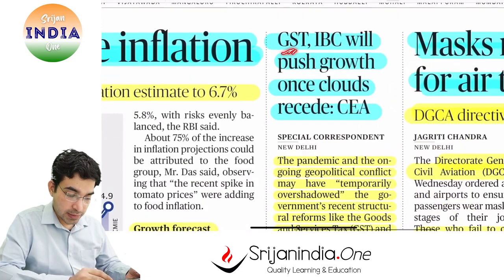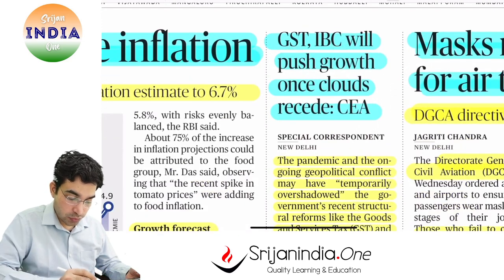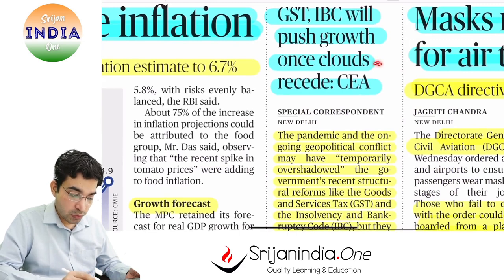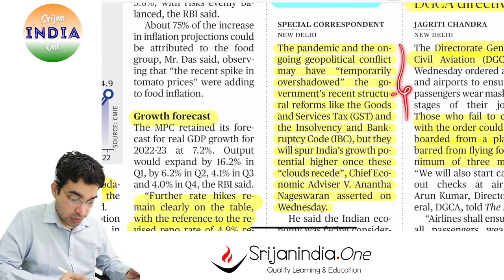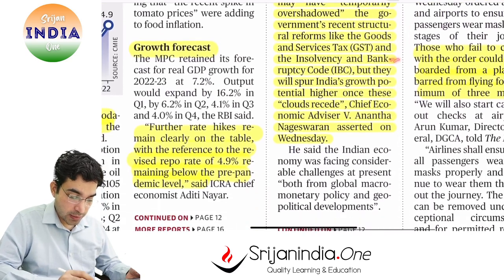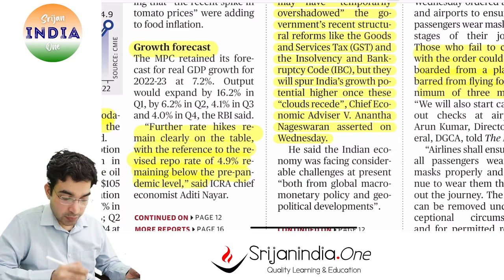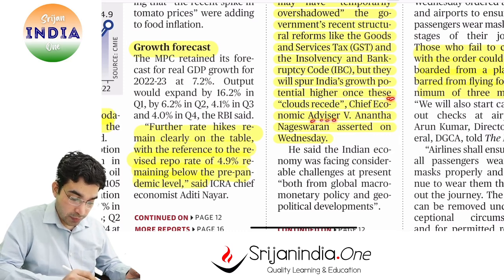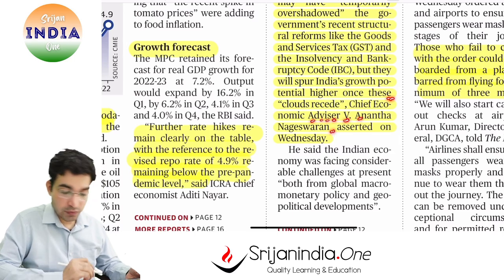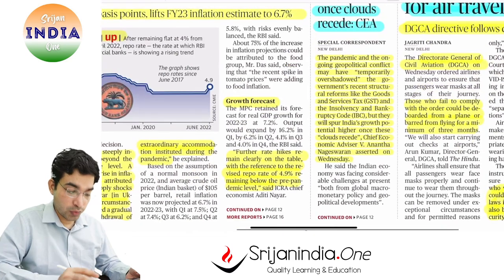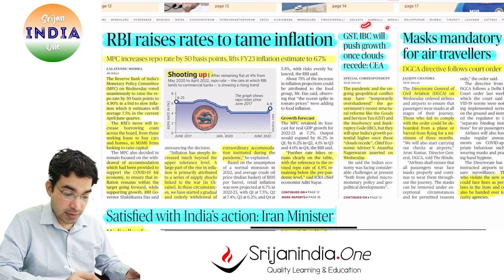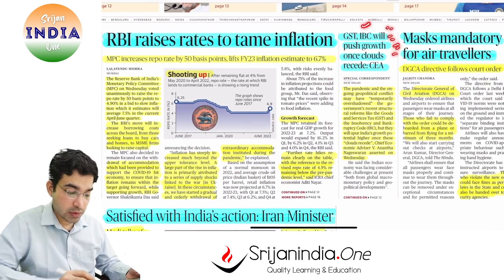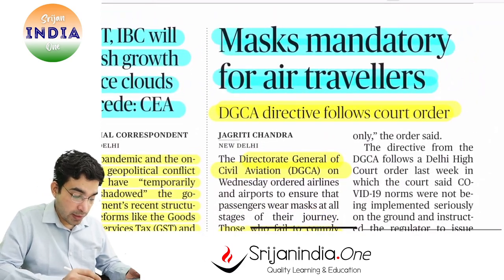GST is a reform, and the Insolvency and Bankruptcy Code (IBC) is also a reform. When the dark clouds of inflation, war, and pandemic recede, GST and IBC reforms will help India considerably. This was stated by Chief Economic Advisor V. Anantha Nageswaran — 'GST, IBC will push growth once clouds recede.'